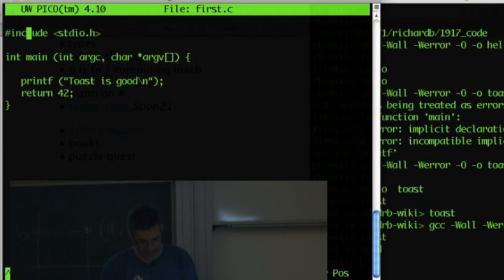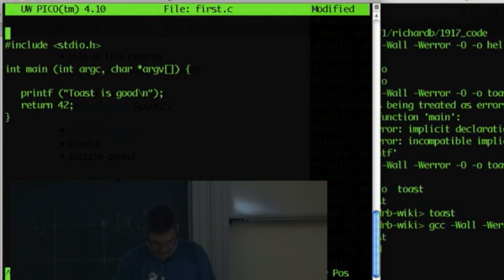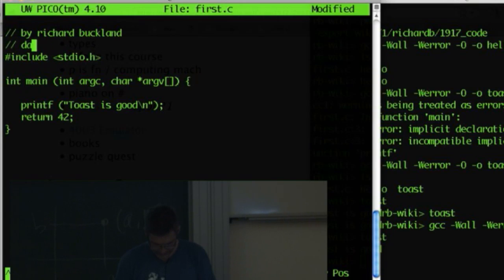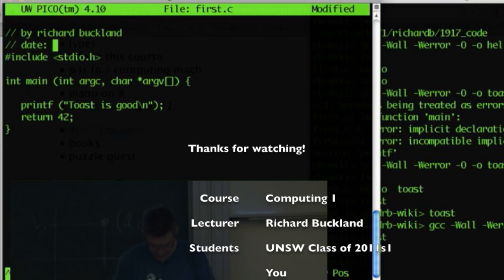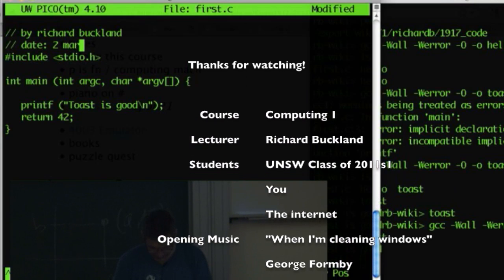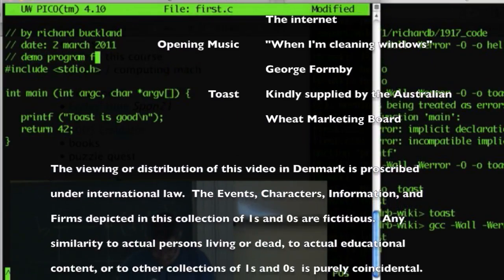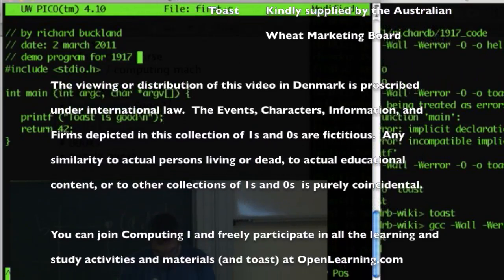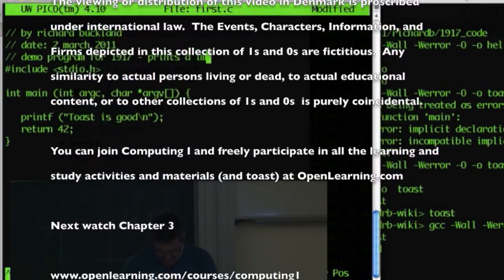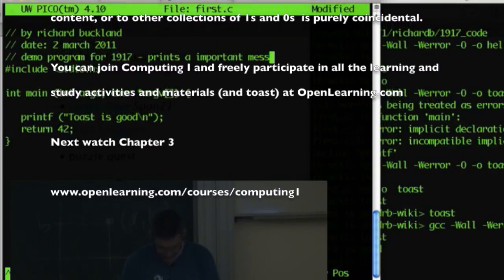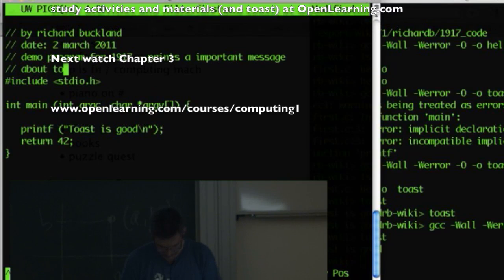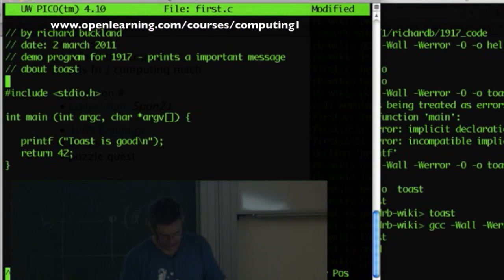So at the top, you'd say something like, we call it a header comment. Comments begin with slash slash. You'd say, by Richard Buckland. Date, whatever it is. I should put the real one in because I'll never come back and change it. What's today's date? 3rd of March? 2nd of March? 2011? And then I should say what the program does. What does it do? Demo program for 1917 prints a important that should be an message about toast. Okay, that's my program.